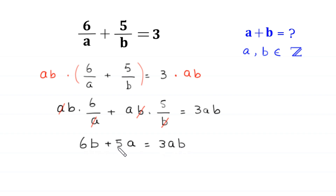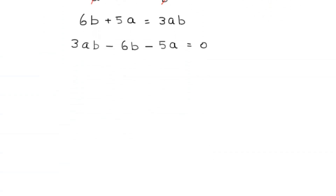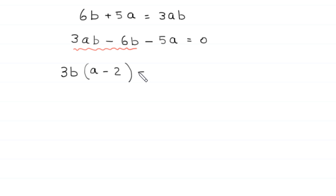Now we move 6b and 5a to the right hand side: 3ab minus 6b minus 5a is equal to 0. From the first two terms, 3ab minus 6b, we can factor out 3b, giving 3b times (a minus 2) minus 5a is equal to 0.